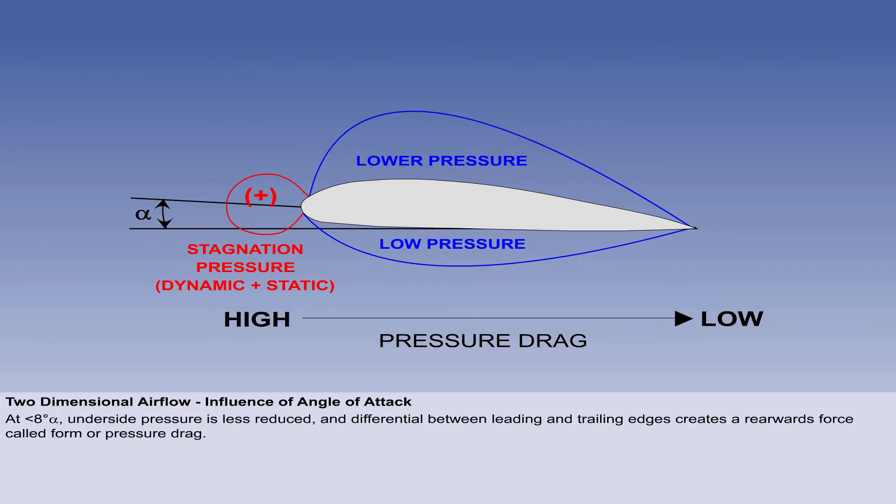At alphas less than 8 degrees, the underside flow is much less accelerated, and reduces pressure to only a small negative value. The pressure differential between the stagnation point and the lower pressure at the trailing edge creates a backwards-acting force, called form or pressure drag, which is covered later in the syllabus.